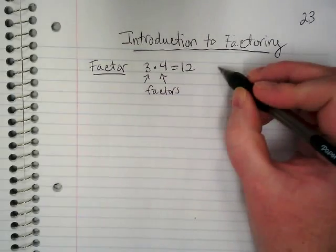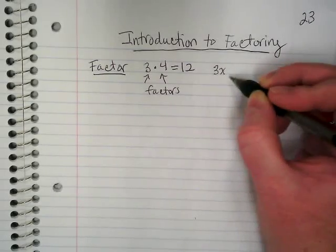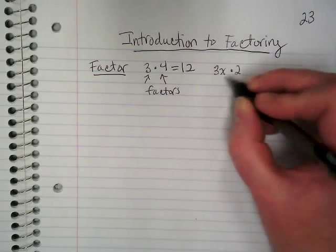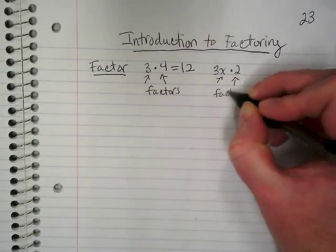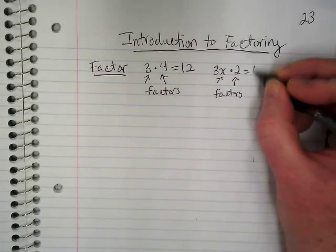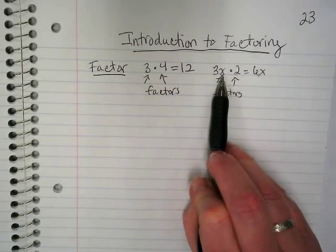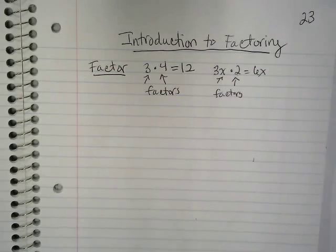And that's still true when we're multiplying numbers with variables. So this coefficient 3 with the x, if I multiply that by 2, both of these are factors. And that equals 6x. We multiply the 3 times the 2, and the 2 becomes part of this as 3 times 2 becomes 6, and the x stays with it.